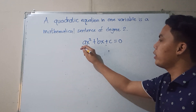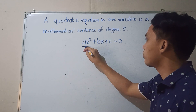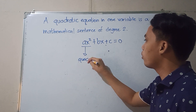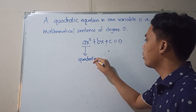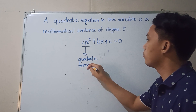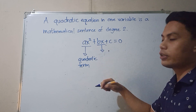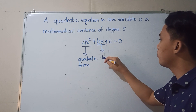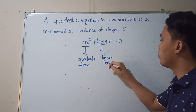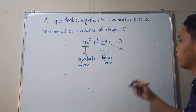Ax squared is our quadratic term. Bx is our linear term. And C is our constant term.